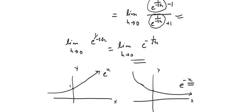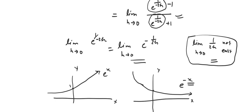As h tends to 0⁺, 1/(2h) goes to larger and larger positive values — it does not have a finite limit, but it grows to +∞. So e^(-1/(2h)) is e raised to a large negative power, and using the graph of e^(-x), we can see this value approaches 0.